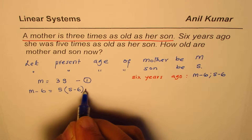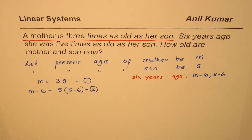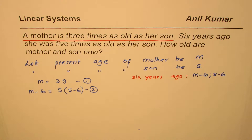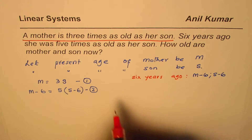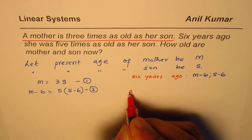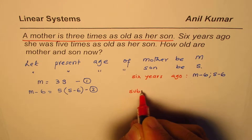So that is how we get two different equations. We have two variables, and this linear system can give us a solution. We can use the method of substitution.